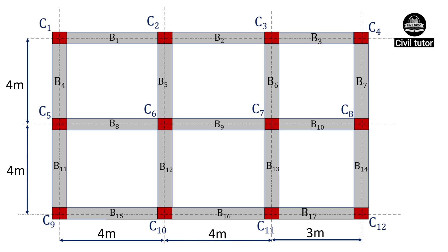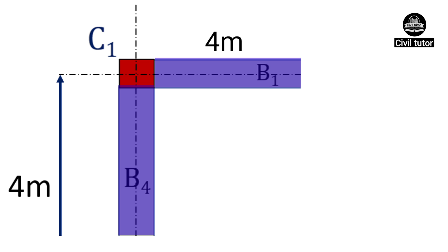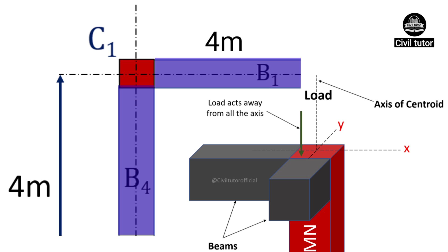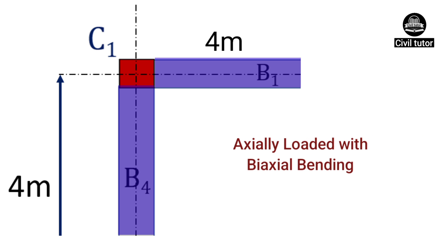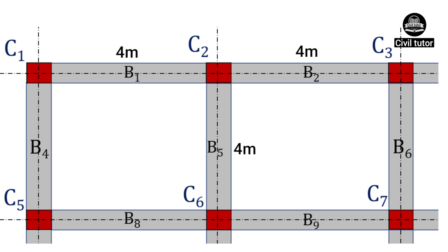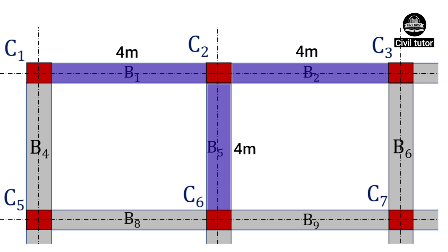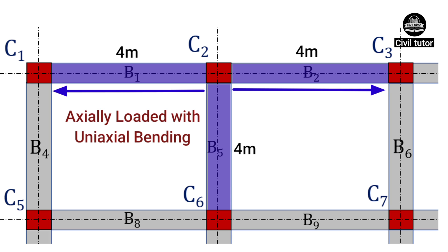In this layout, we need to identify whether these columns are axially loaded, uniaxially loaded, or biaxially loaded. Column C1 is connected by two beams B1 and B4, which are aligned perpendicular to each other. Therefore, moments will be created along both axes — x-axis and y-axis — making the load eccentric along both axes. Hence C1 is an axially loaded column with biaxial bending. C2 satisfies the criteria of uniaxial bending, since it is connected by three beams B1, B2, and B5, and beams B1 and B2 lie on opposite sides with the same span of 4 meters. Therefore, the effect of the moment due to B1 and B2 will be zero, and the net moment will be created due to B5 only. Hence C2 is an axially loaded column with uniaxial bending.